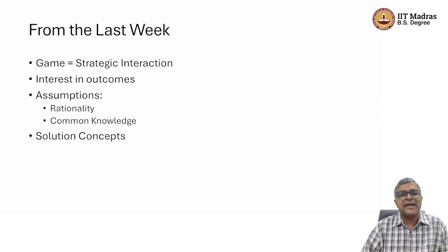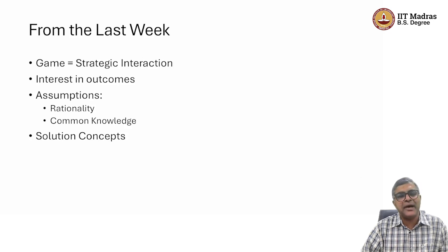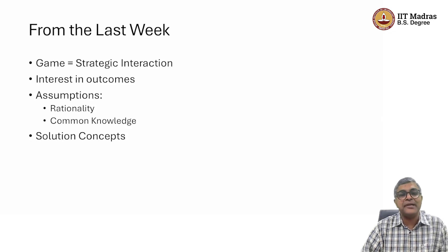Two main assumptions were rationality and common knowledge. Rationality said that players are able to make decisions, they are consistent in making decisions, they are able to calculate things perfectly, they have infinite memory, they remember what happened in the past, and most importantly, they are interested in maximizing their benefit. Common knowledge said that each one has knowledge about the game they are playing, each one knows that others have knowledge about the game they are playing, and each one knows that each one knows that each one has knowledge about the game, and so on.